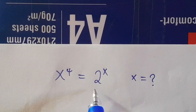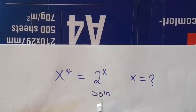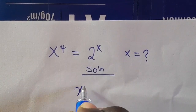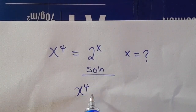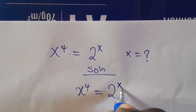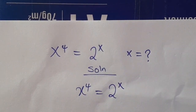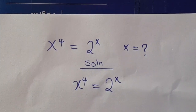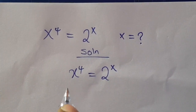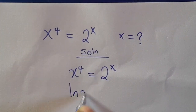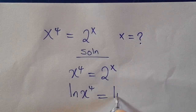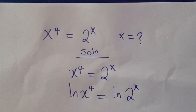Now from here, we have x raised to power 4 to be equal to 2 raised to power x. So from here, let us introduce natural log to both sides: ln of x raised to power 4 equals ln of 2 raised to power x.